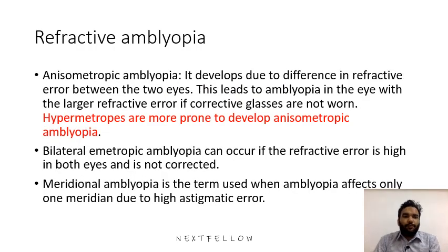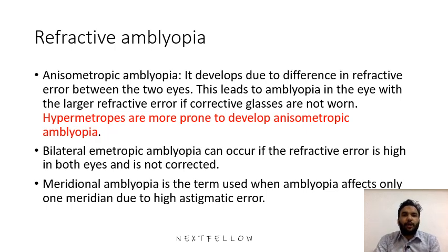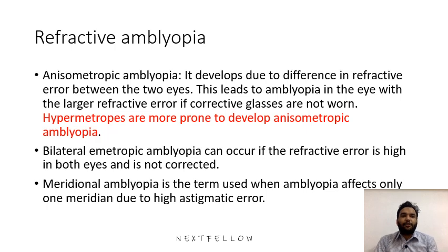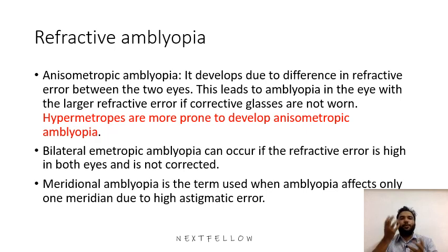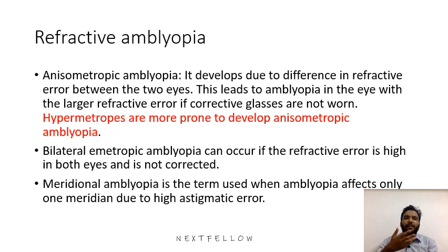Coming to refractive amblyopia, there are different types. Anisometropic amblyopia is due to a difference in refractive error between the two eyes, leading to amblyopia in the eye with the larger refractive error if corrective glasses are not worn. Hyperopes are more prone to develop anisometropic amblyopia — for example, one eye has minus 3 and the other minus 1. Patients with equal power in both eyes alternate between eyes and do not develop amblyopia, but with anisometropia they preferentially use the eye with less power.